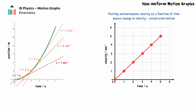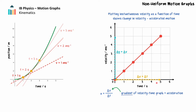The gradient of the velocity time graph — that is the change in velocity over the time interval — is the acceleration of the object during that time interval. For the basketball, the change in velocity can be read from the vertical axis and is 5 m per second. The time over which this change in velocity occurs can be read from the horizontal axis and is 5 seconds. Therefore, the gradient is 1 m per second squared, so the basketball accelerated at a rate of 1 m per second squared.